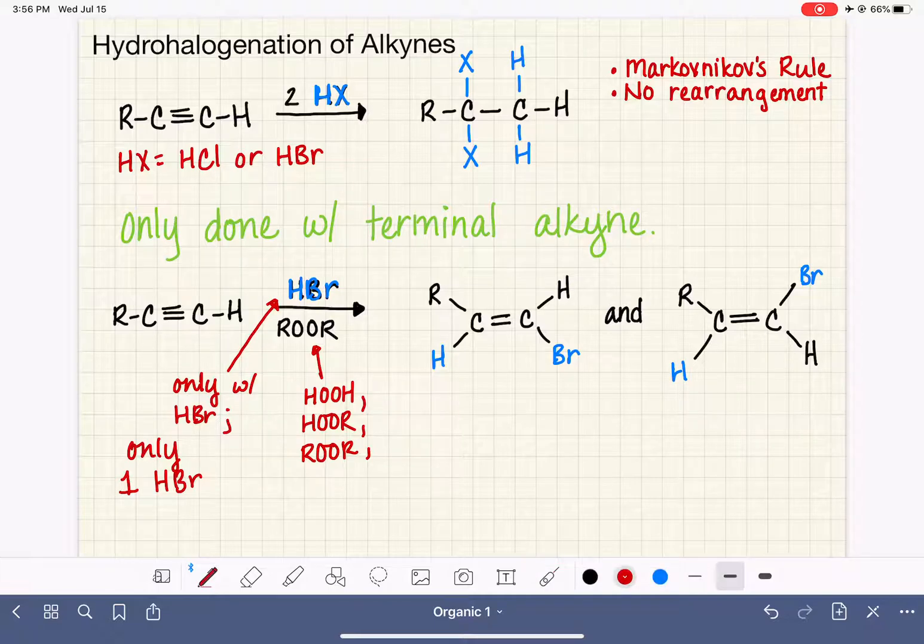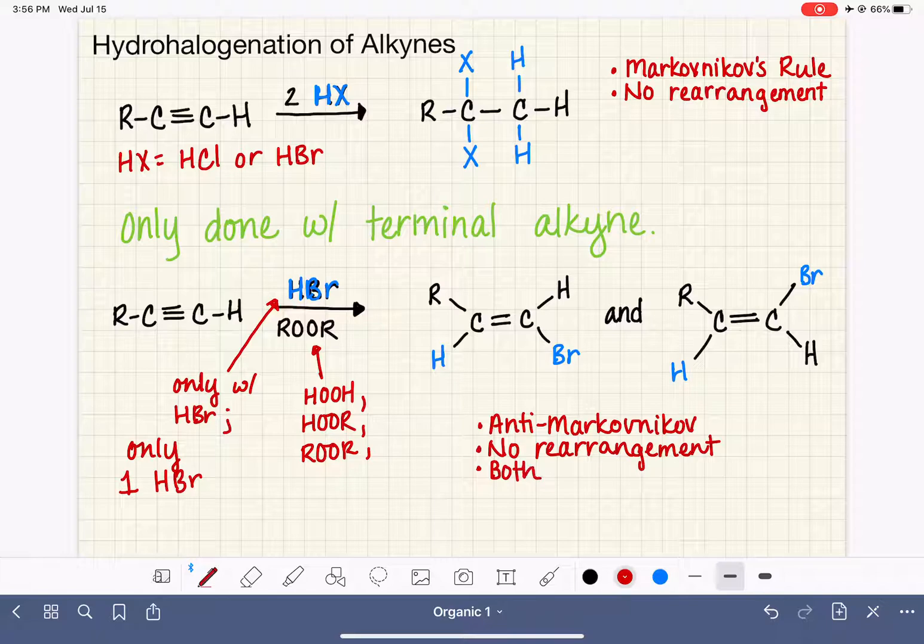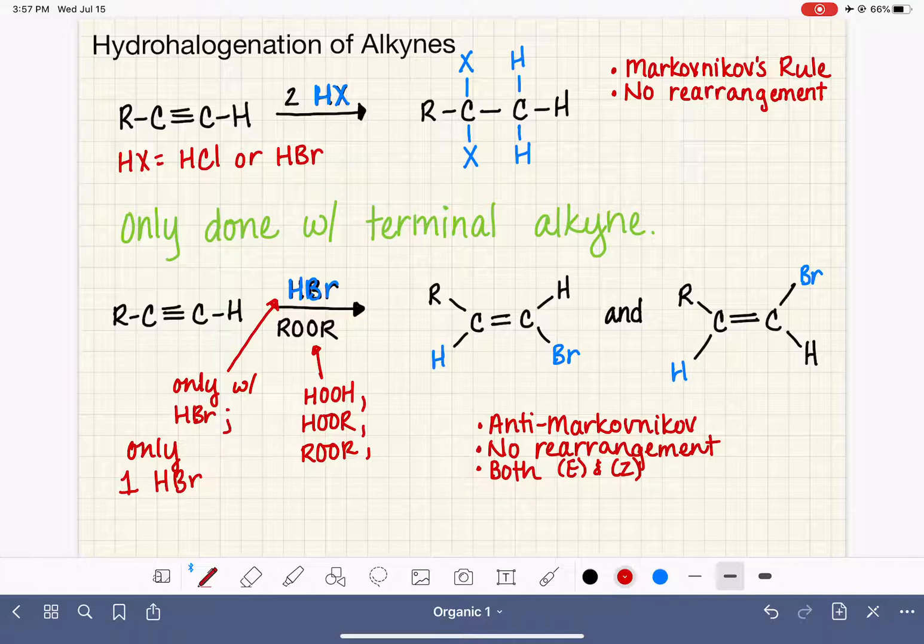So for this, we have anti-Markovnikov. We also have no rearrangement. And in terms of stereochemistry, we will make both the E and the Z isomers, or cis and trans.